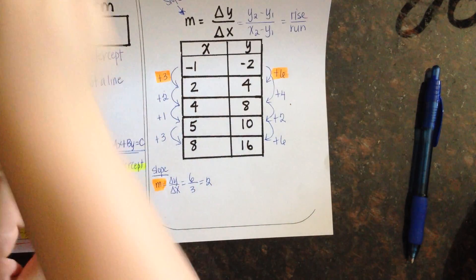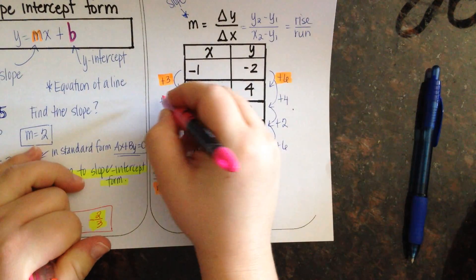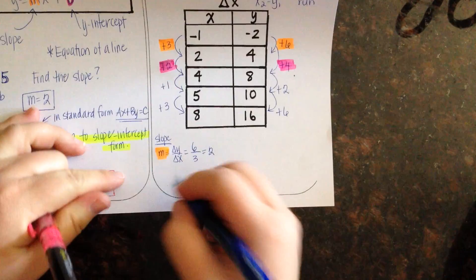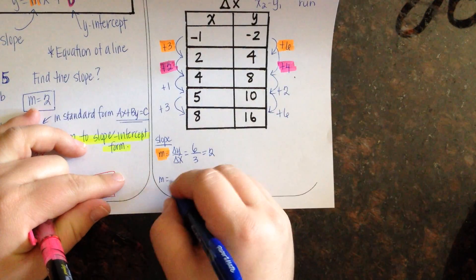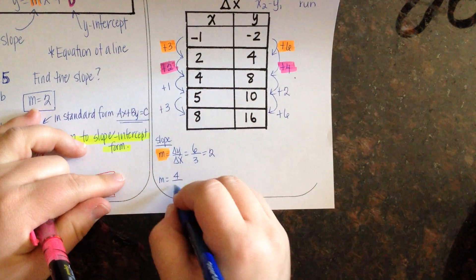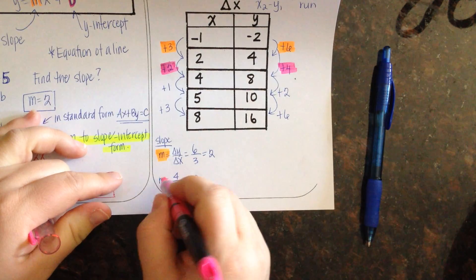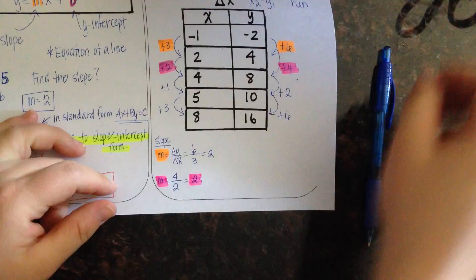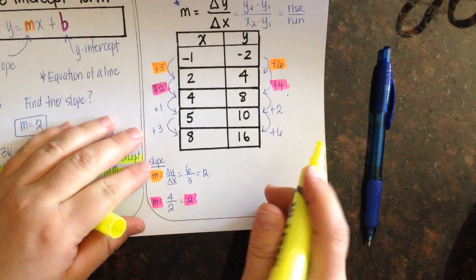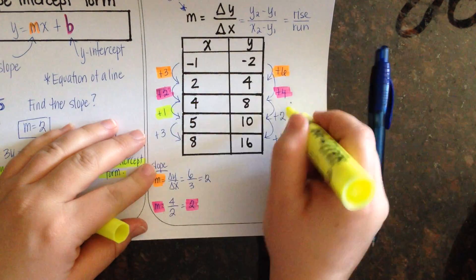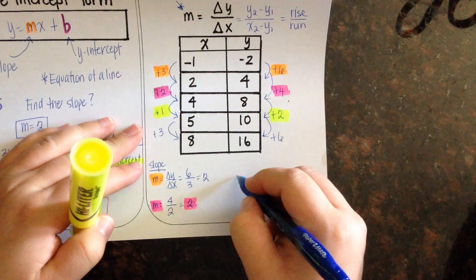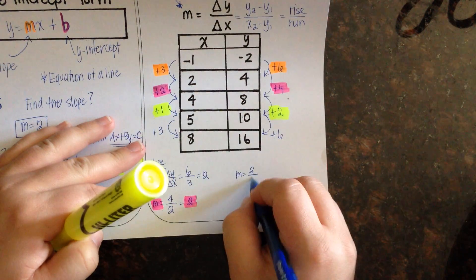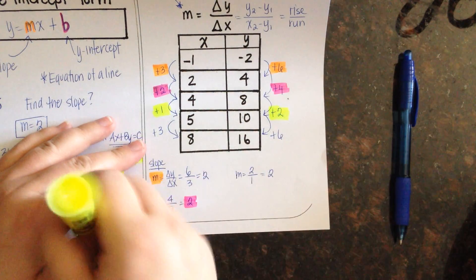The next slope I'm going to calculate, I'm going to look at the change in y and the change in x for the pink values. And so m equals, my change in y was 4 over 2, which when I reduce that is 2. Next one, I'm going to do the yellow values here. So, the change in y, 8 to 10 was a positive 2. Change in x was a positive 1, which when I reduce that down, I get a 2.